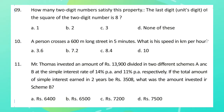Question 9: How many two-digit numbers satisfy this property — the last digit (unit digit) of the square of the two-digit number is 8? Question 10: A person crosses a 600-meter long street in 5 minutes. What is his speed in kilometers per hour? Question 11: Mr. Thomas invested an amount of rupees 13,900 divided in two different schemes A and B at simple interest rate of 14% per annum and 11% per annum respectively. If the total amount of simple interest earned in two years is rupees 3508, what was the amount invested in scheme B?